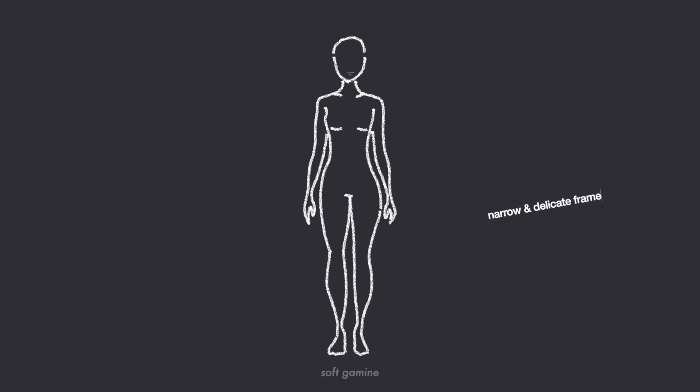Soft Gamine: petite and curve. If you have the soft gamine body type, then your dominant features are petite and curve. The soft gamine has a narrow and sharp petite bone structure with a slightly curvy figure, creating a youthful appearance. It is important to remember that the soft gamine woman is primarily in the gamine family, so her bone structure is more dominant than her softness. Due to her gamine bone structure, her curve is more elongated. She often has a small and slightly rounded facial shape with large eyes and full lips, and will often have an ingenue appearance, especially in her facial features.